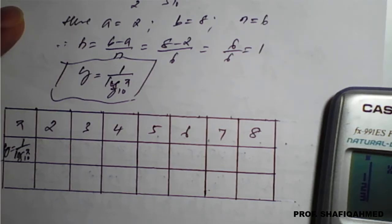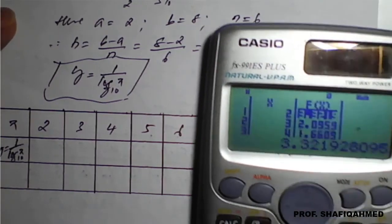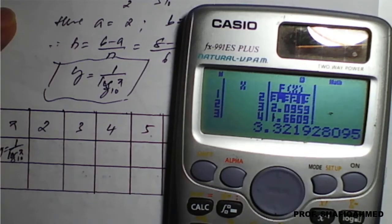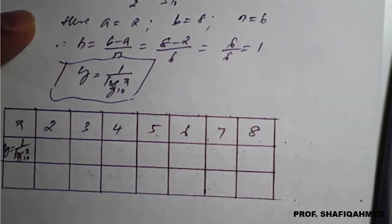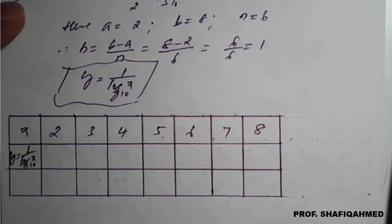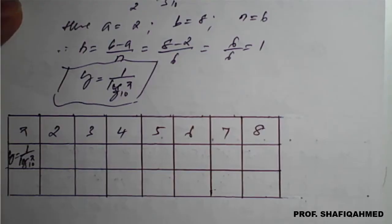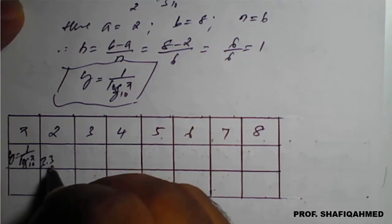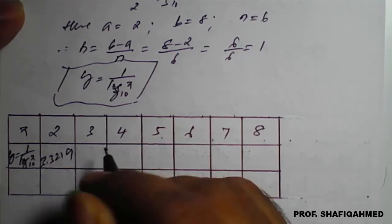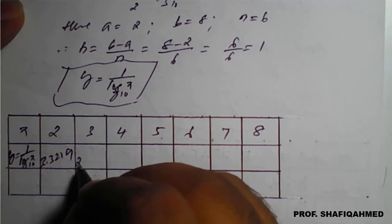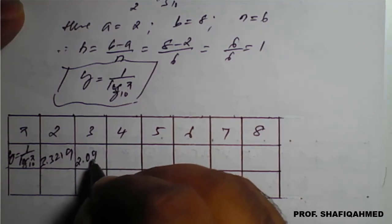For x equals 2, it is 3.3219. We will collect all the values from the calculator and fill the table. For x equals 3, you will get, as you can see in the calculator, 2.0959.